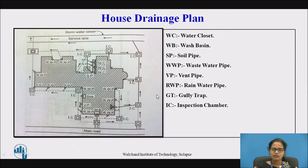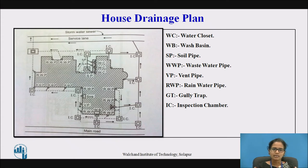The sewage is the pipe carrying the sewage — it is called as the sewage. On the other hand, sludge is the waste water coming from the kitchens, wash basins, etc. — that is called as the sludge.